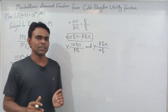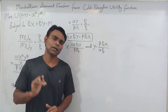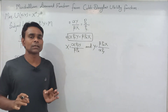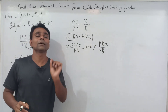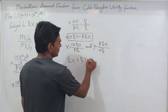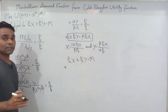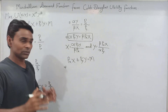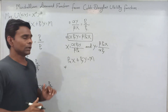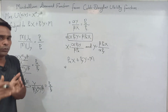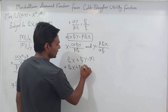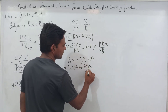Now by substituting the value of x or y we can calculate the Marshallian demand function for goods x and y. To find the Marshallian demand function for good x, we substitute the value of y into the budget constraint: Px times x plus Py times y equals m. Conversely, to get the Marshallian demand function for good y, we substitute the value of x instead.